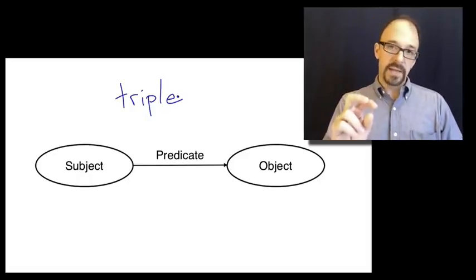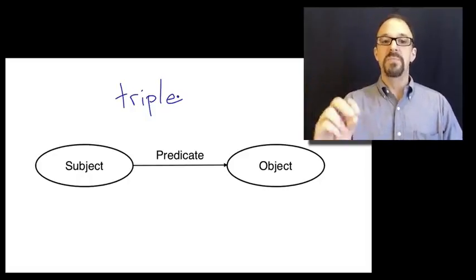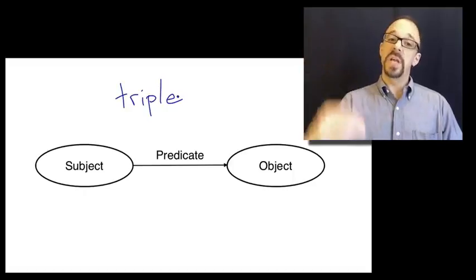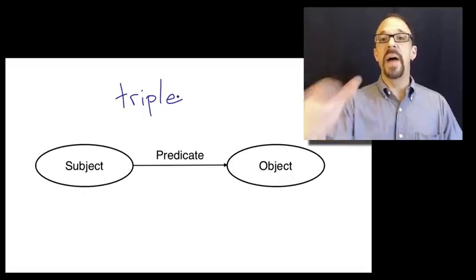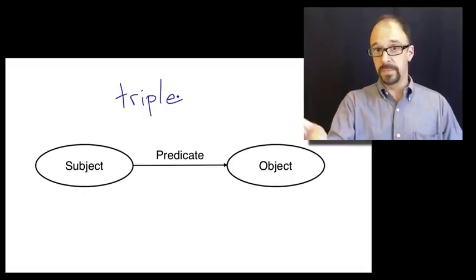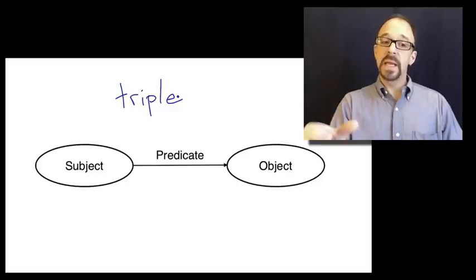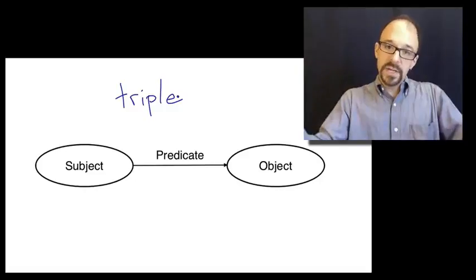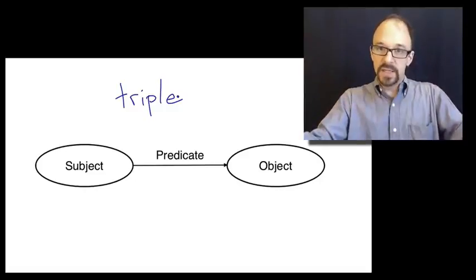So, the object is the resource being described by a metadata record. The subject is the value of that description. And the predicate is the element in the metadata record that establishes what the relationship is between the object and the subject.